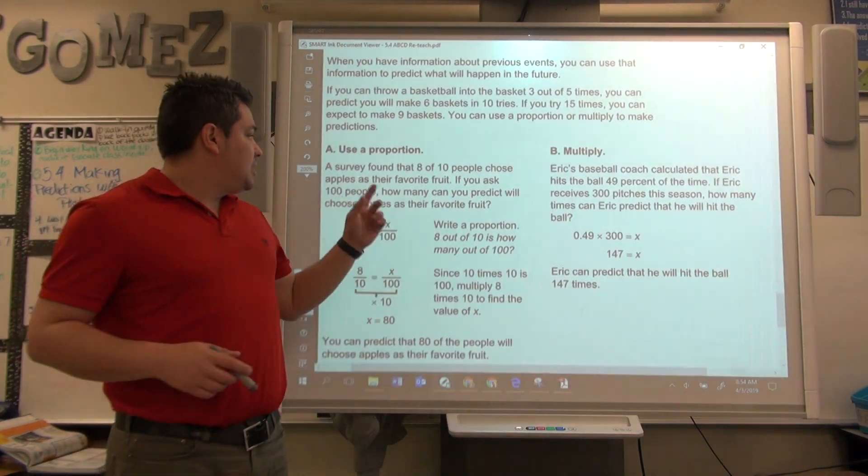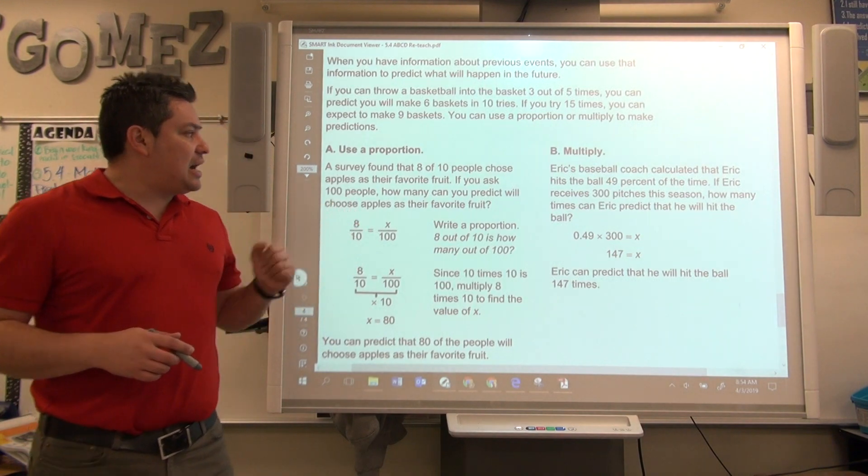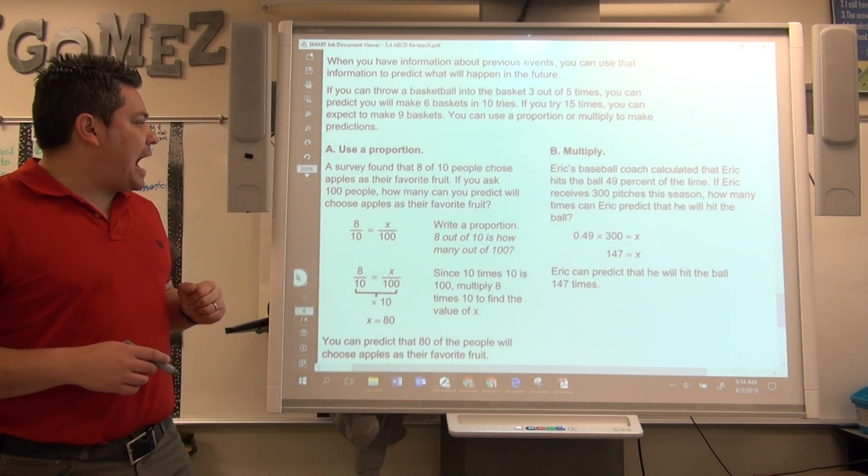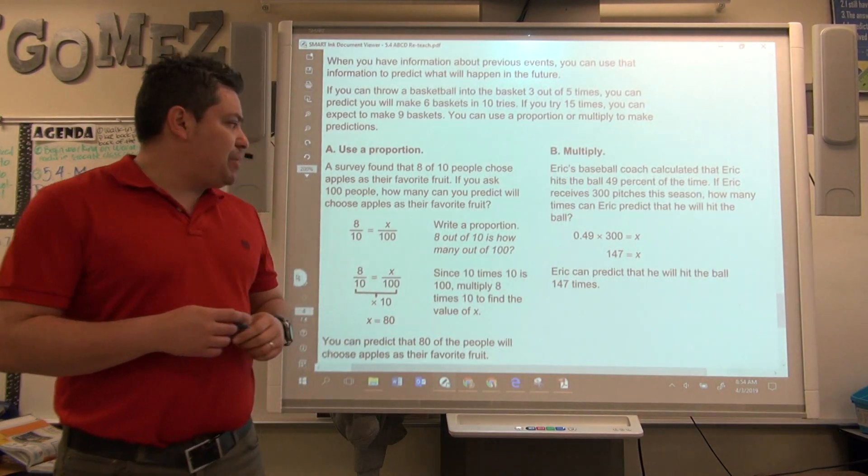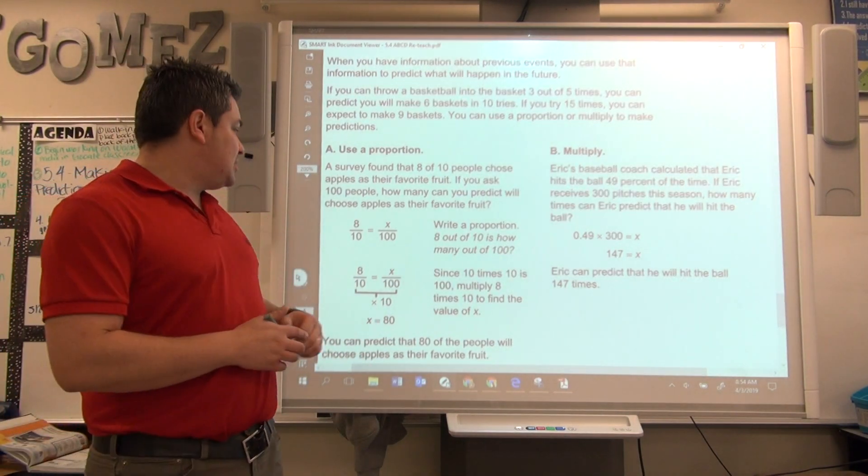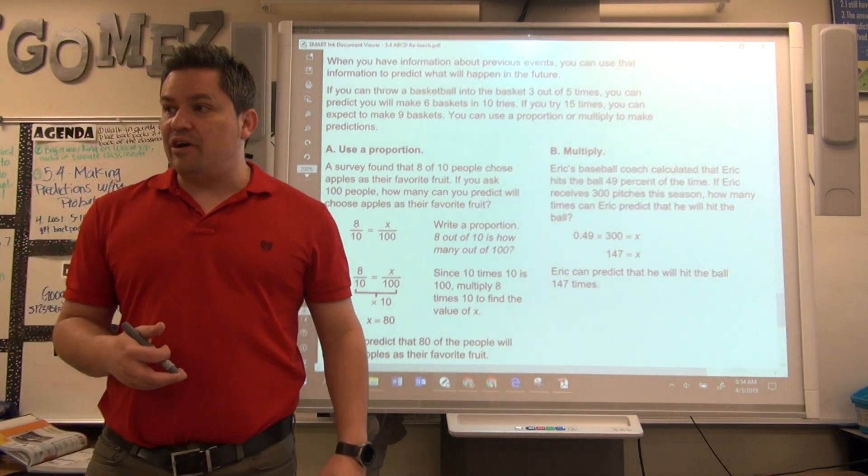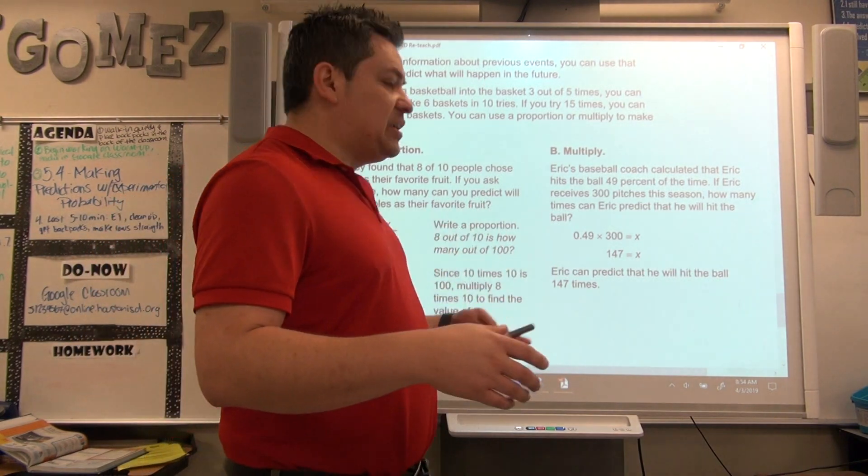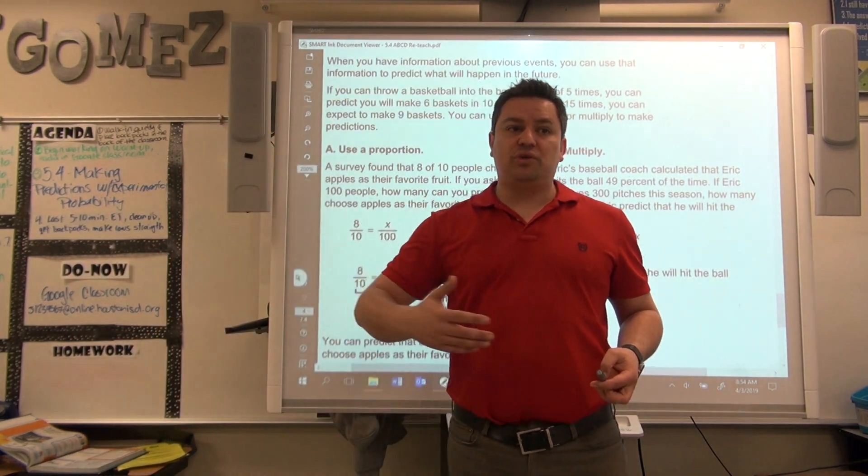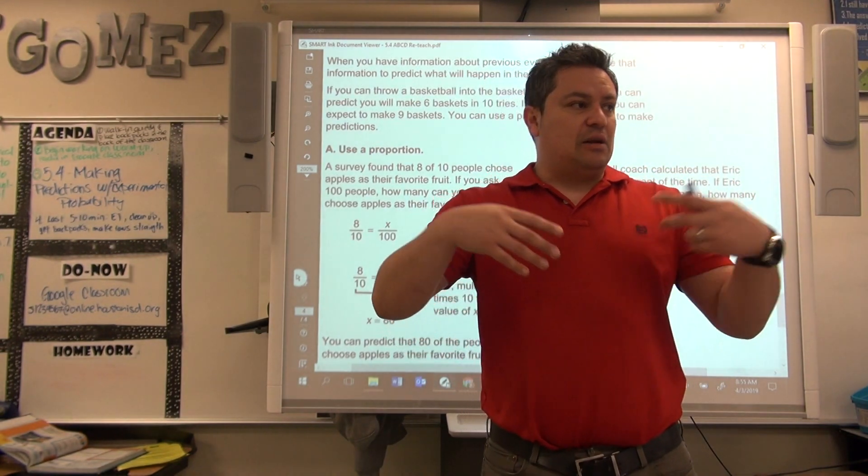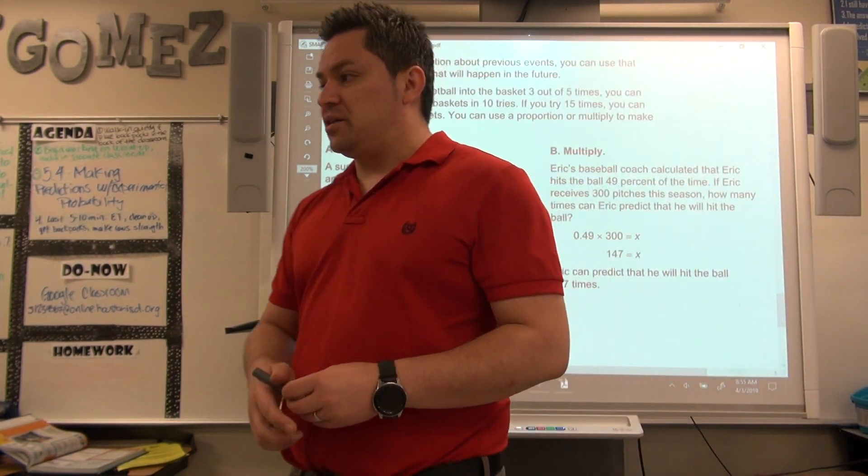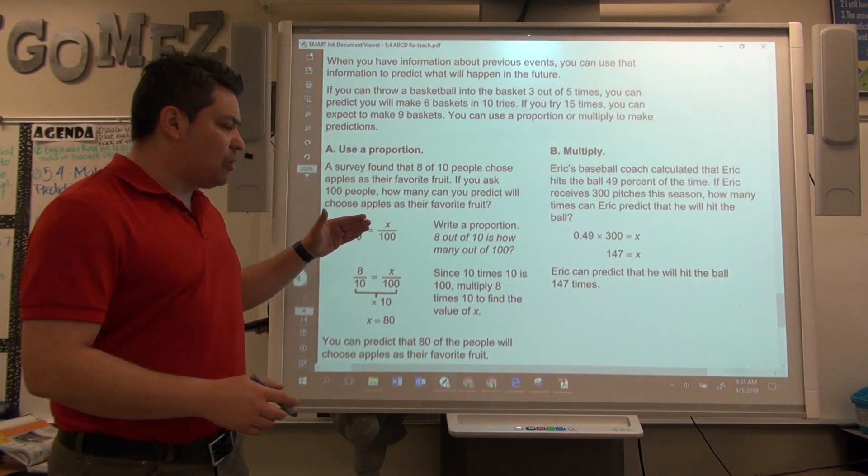And we have a statement that says, a survey found that eight out of ten people choose apples as their favorite fruit. If you ask a hundred people, how many can you predict that they will choose apples as their favorite fruit? So, this survey, they usually, instead of asking the whole country, they just ask for a small number of people and then multiply it out. In this case, they did it with cross products. So, first of all, you've got to look at the keywords.